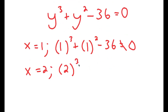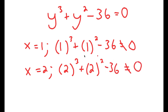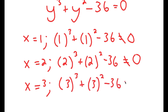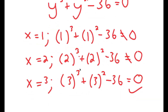For y equals 2, I get 2 to the power of 3 plus 2 squared minus 36, which is 8 plus 4, which is 12 minus 36 — that does not equal 0 either. For y equals 3, I get 3 to the power of 3 plus 3 squared minus 36. 3 cubed is 27, plus 9 is 36, and 36 minus 36 equals 0. So y equals 3 is a solution.